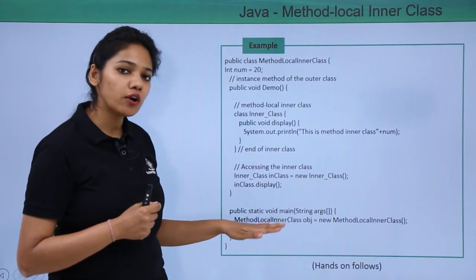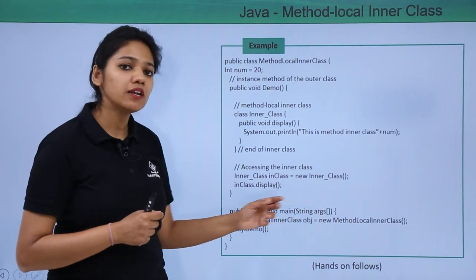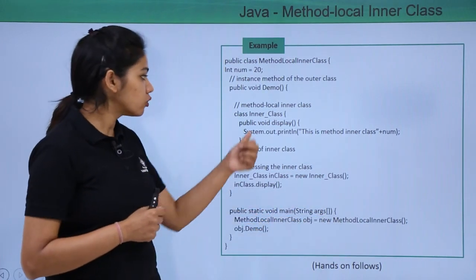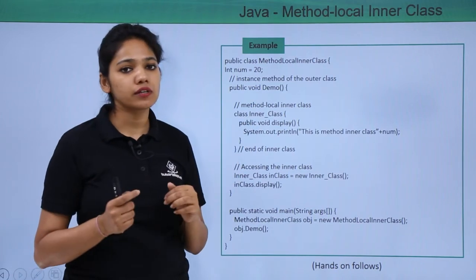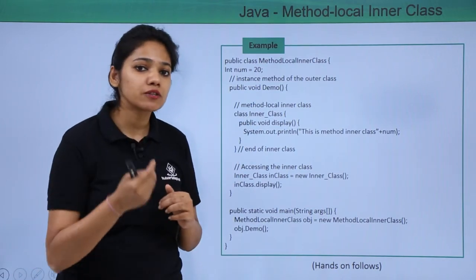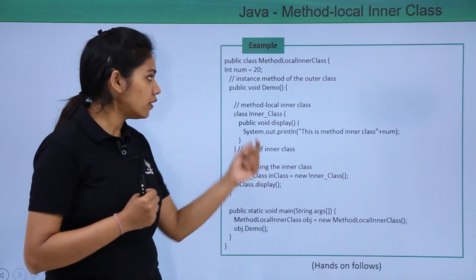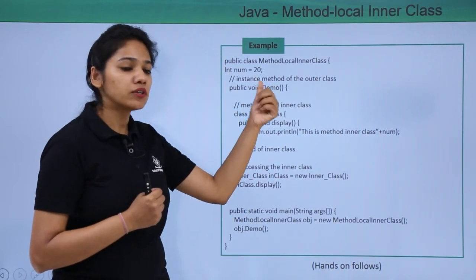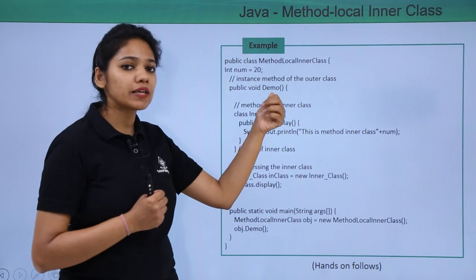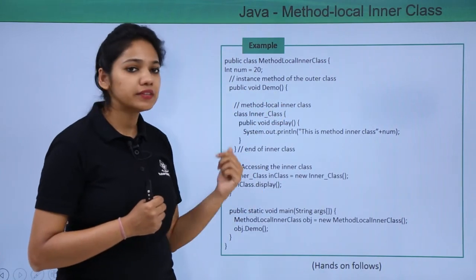Now in the static void main method, you instantiate your outer class and then call the method of your outer class — the method which contains your inner class. So you write object.demo(). The outer class method gets called and performs these actions.